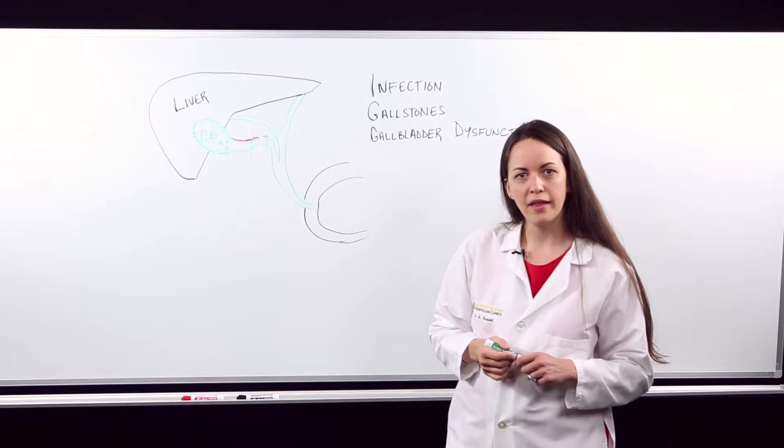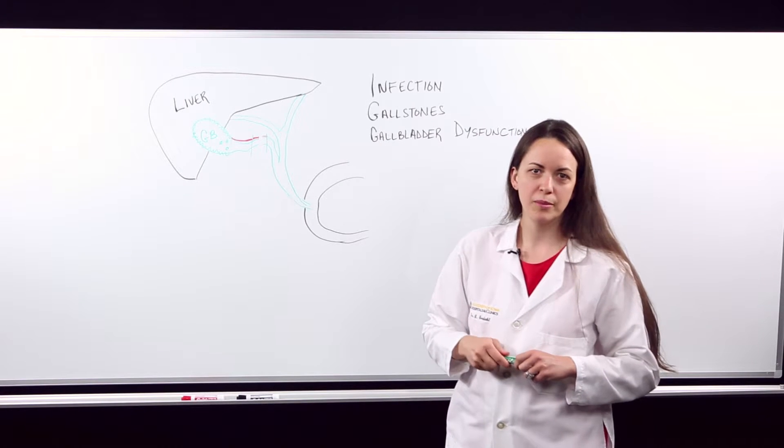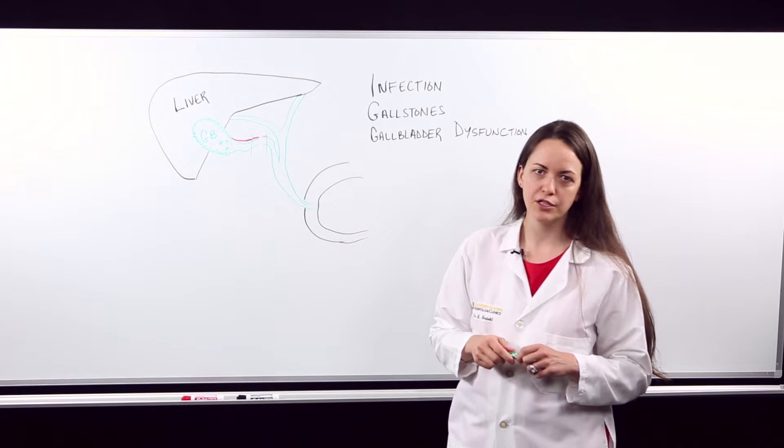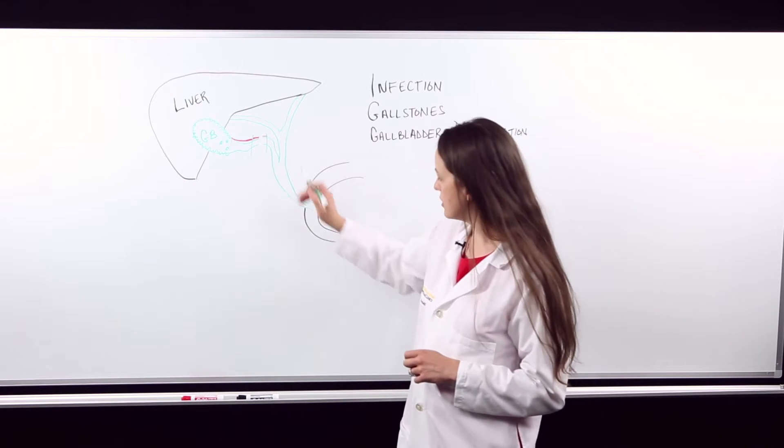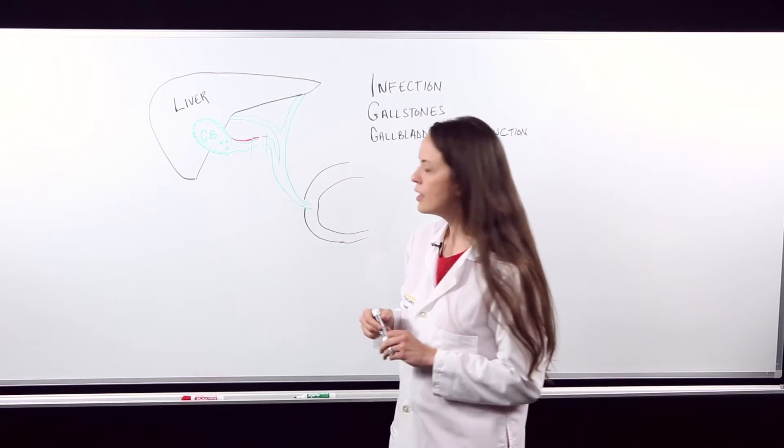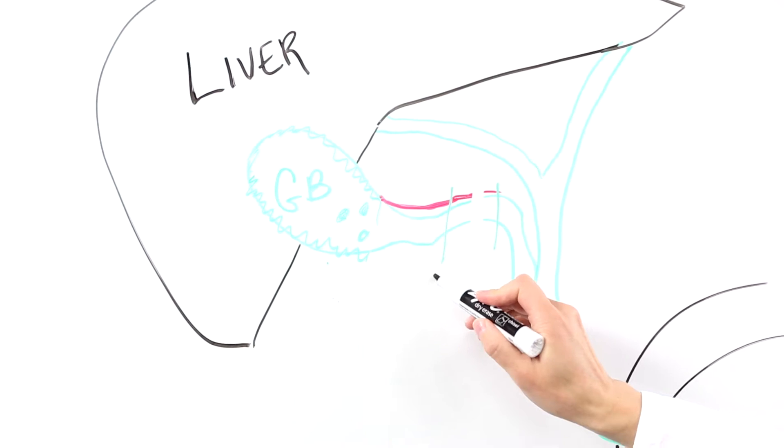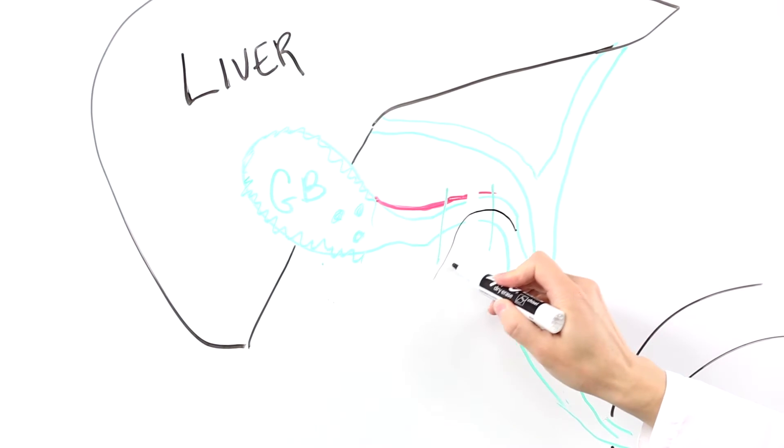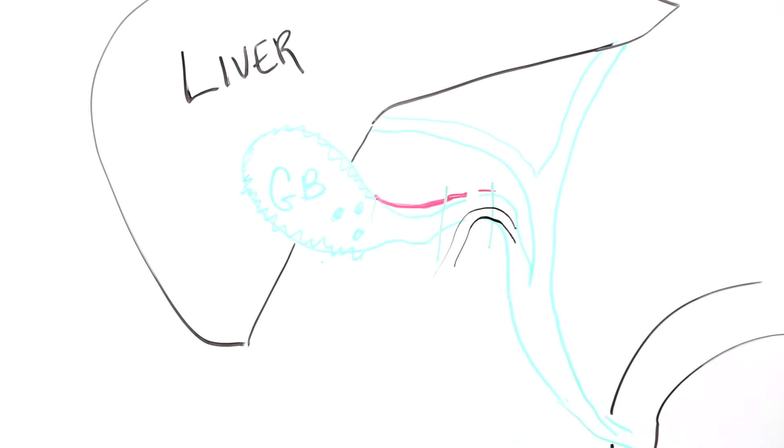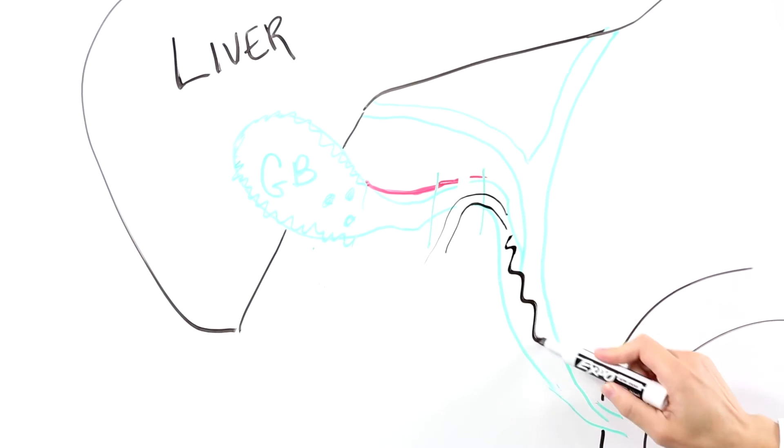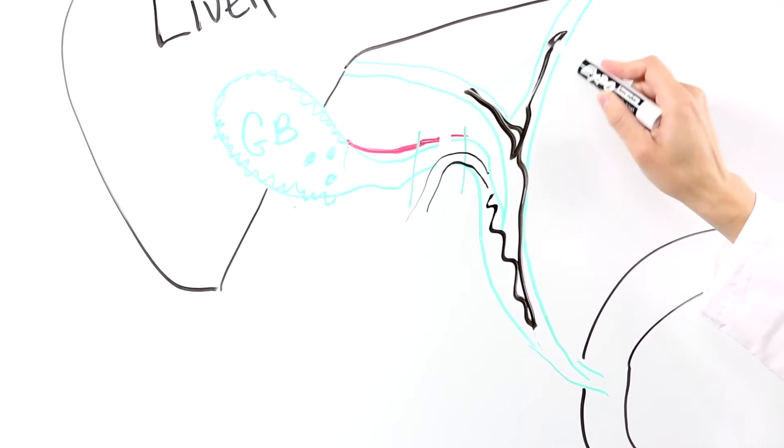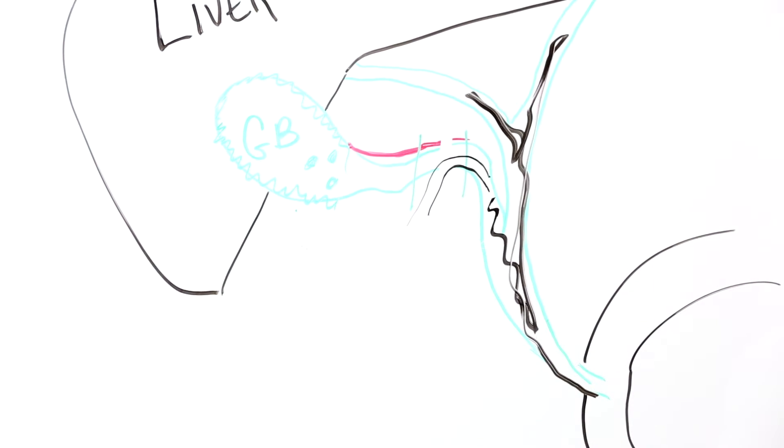Sometimes in order to identify that anatomy the surgeon might perform a test called an intraoperative cholangiogram. To perform a cholangiogram, a catheter is inserted into the cystic duct. An x-ray dye is injected down that catheter. An x-ray is then taken which shows the dye traveling in the ducts to identify the anatomy.